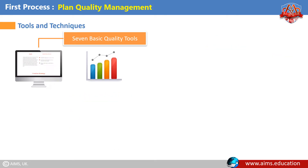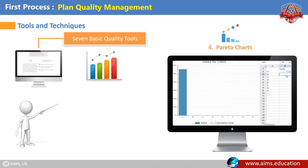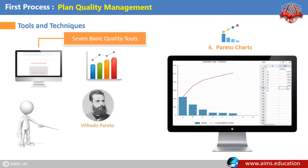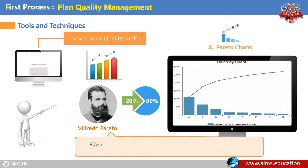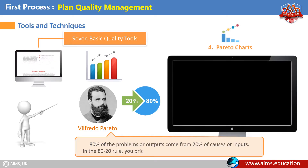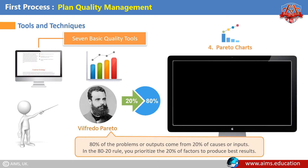The fourth basic quality tool — Pareto Charts: These are used to identify and prioritize problems to be solved. They are histograms aided by the 80-20 rule introduced by Vilfredo Pareto. The 80-20 rule says that 80% of the problems or outputs come from 20% of the causes or inputs. You prioritize the 20% of the factors to produce the best results. Pareto Charts rank order the most important factors by their frequency over time.